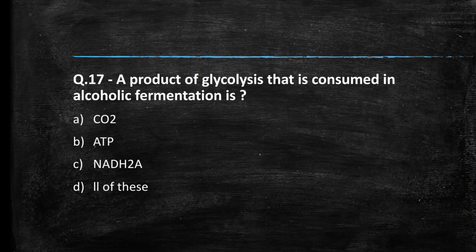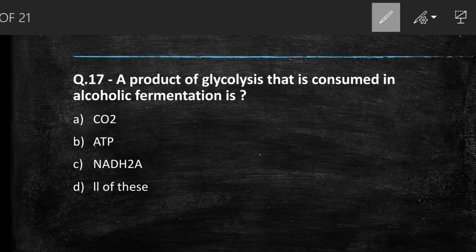Next question: a product of glycolysis that is consumed in alcoholic fermentation is — (A) CO₂, (B) ATP, (C) NADH₂, (D) all of the above. The right answer is option D, all of the above. To continue producing ATP from glycolysis, you have to re-oxidize NADH₂ into NAD⁺ so that the glycolysis process can continue.